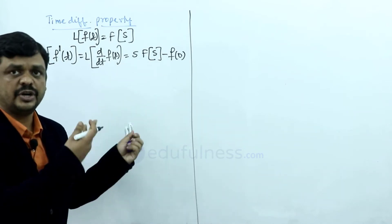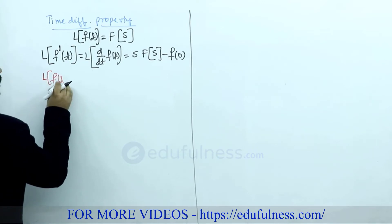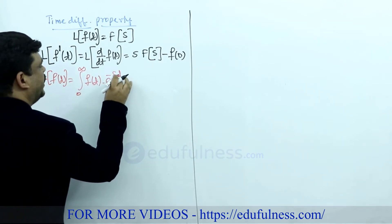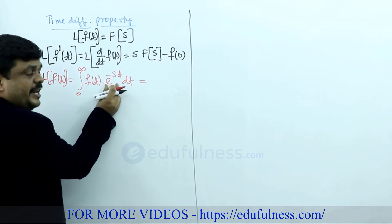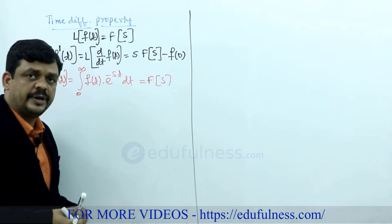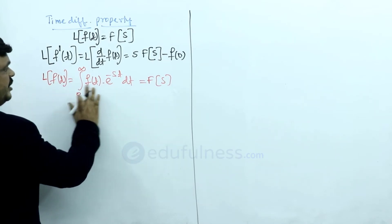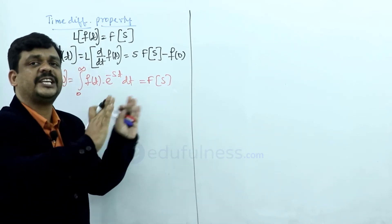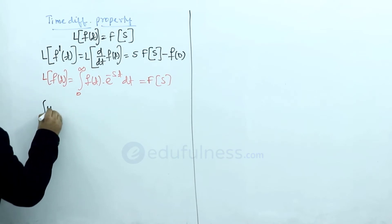Now we have to prove this. For that purpose, I am taking the basic Laplace transform formula: Laplace transform of f(t) is the integration from 0 to infinity of f(t) into e^(−st) dt. Within this equation, f(t) multiplies with e^(−st) dt — that is why I wrote Laplace transform of f(t) equals F(s). Now, from this I want to find the Laplace transform of f'(t), and to expand the equation, I will use the standard integration formula: integral of u dv.